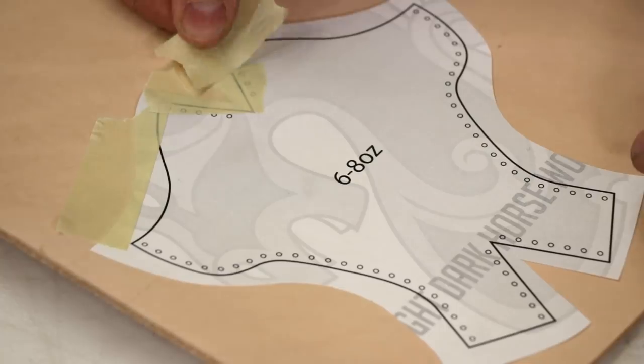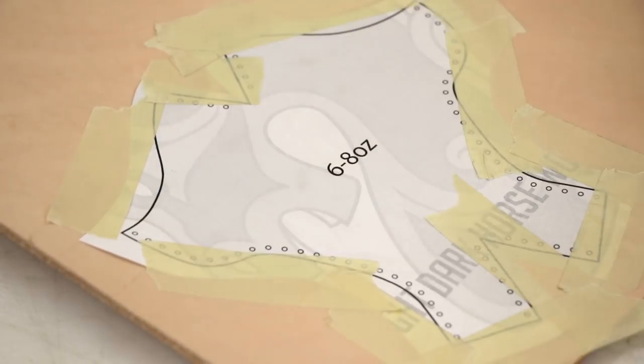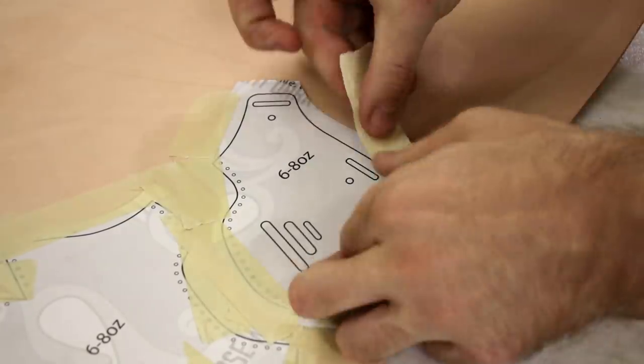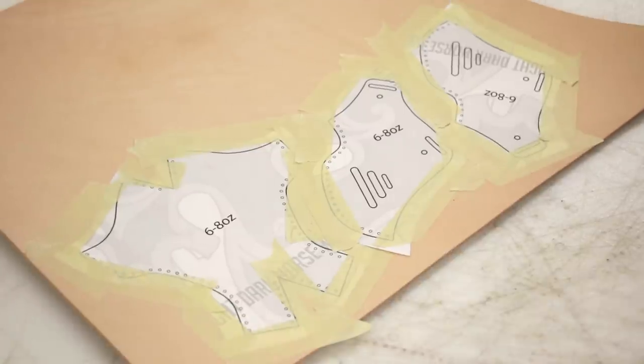Now, I don't usually tape patterns down like this, and this isn't something I would ever regularly do beyond showing you guys a video. But if you're just doing a one-off piece, this is a pretty good way of doing it. You just tape your pattern down to your leather, then punch all your holes, and then cut around it.